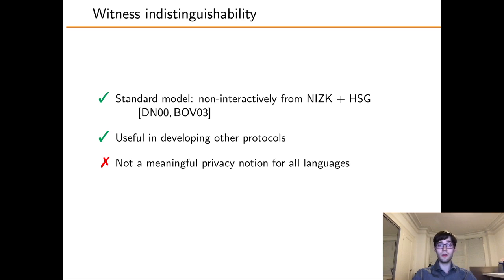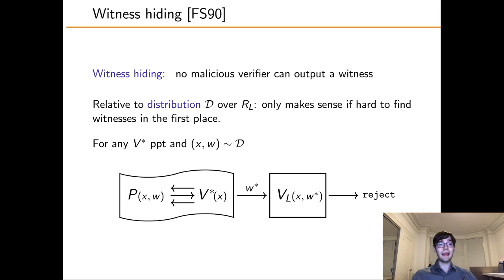On their own, witness indistinguishable proofs are not always interesting. For example, if the language L has unique witnesses, then every proof system is trivially witness indistinguishable. With that counterexample in mind, we move to the definition of witness hiding.